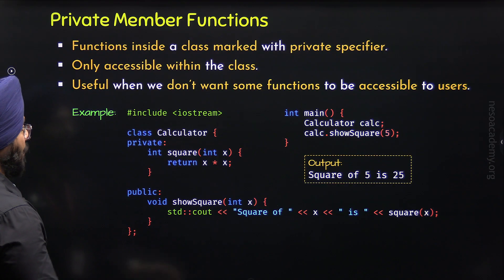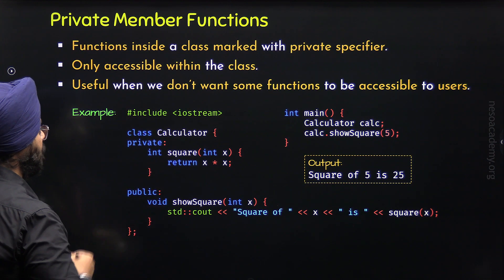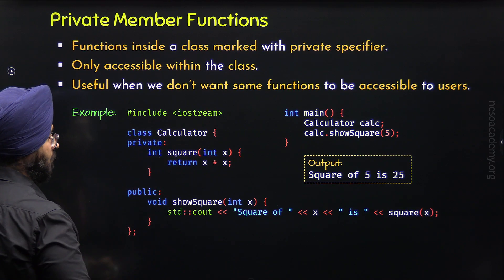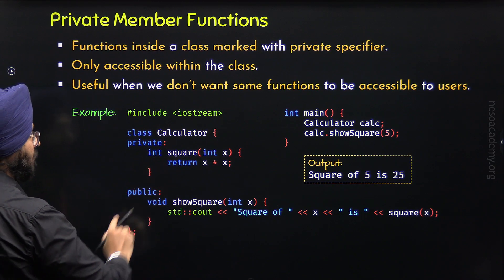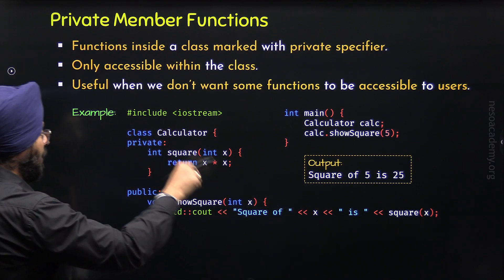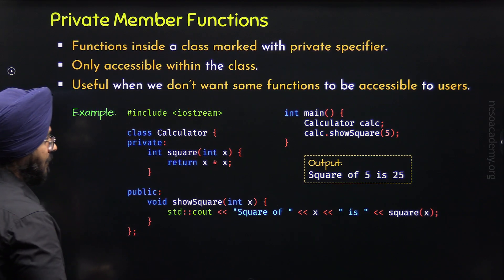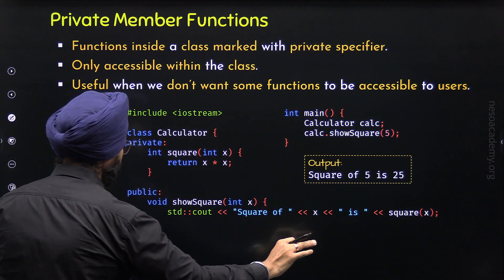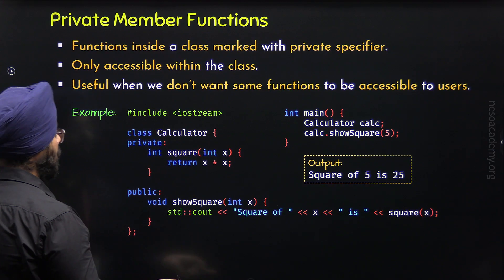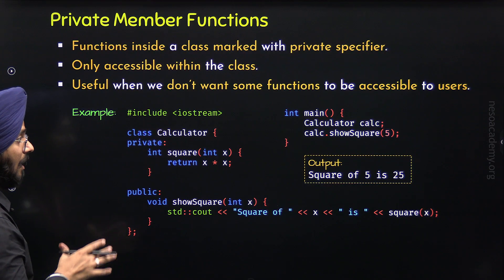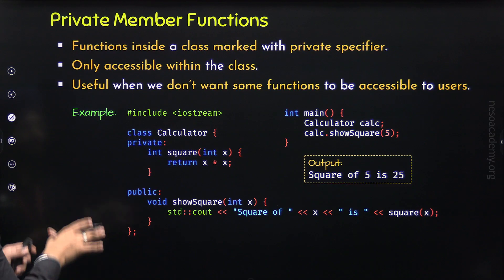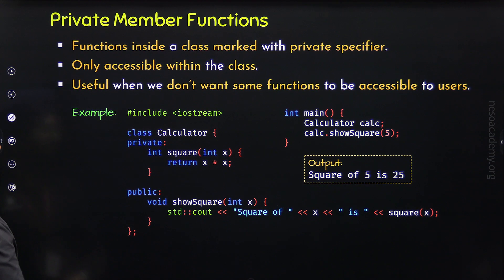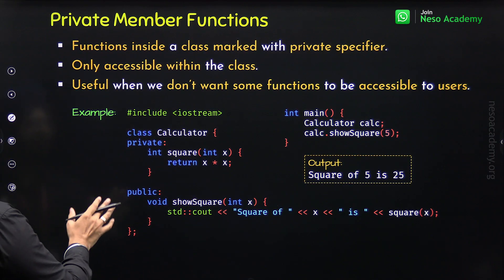In this way, a private member function can be defined, and its usefulness is clear from this program. We are restricting the call to the square function — not allowing direct access to it from the outside world. We are only allowing show_square to be called externally. This function lets us display the square of a number in a specific format. We do not allow the square function to be called or manipulated from the outside world, thus providing restrictive access. The square function can only be called indirectly through show_square.